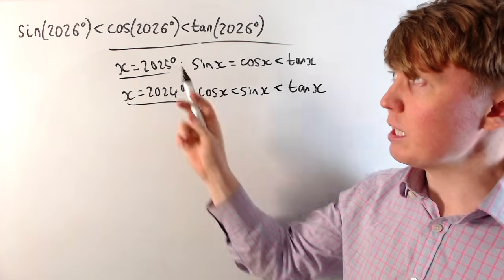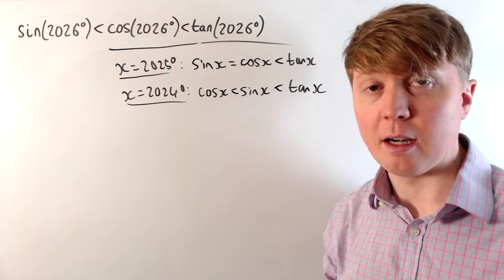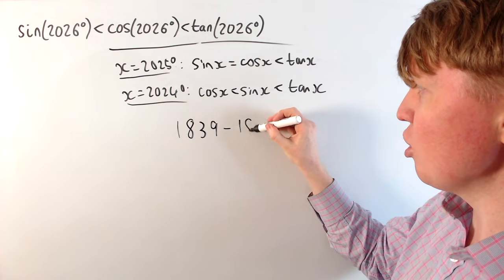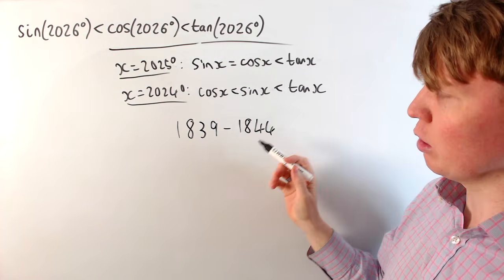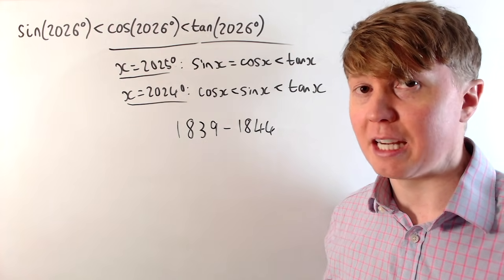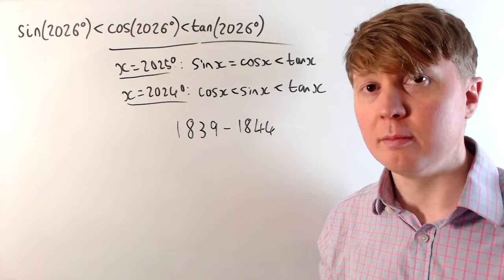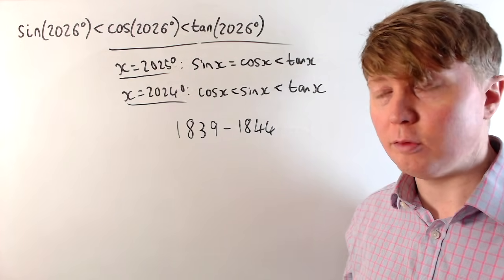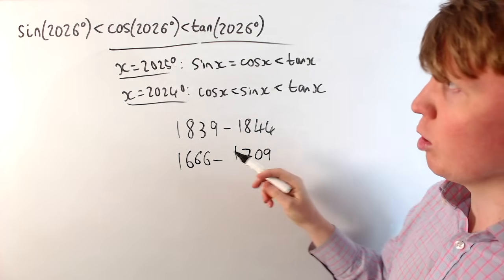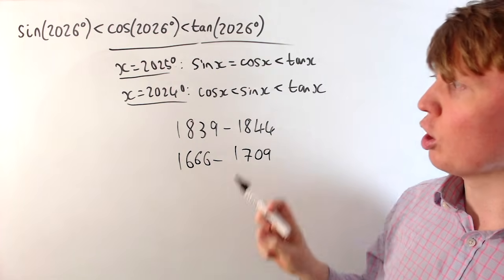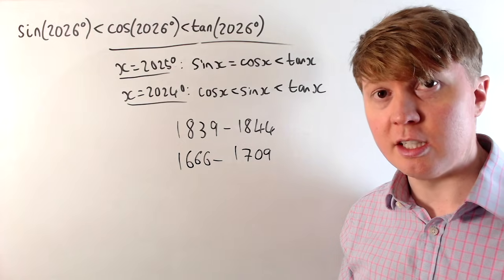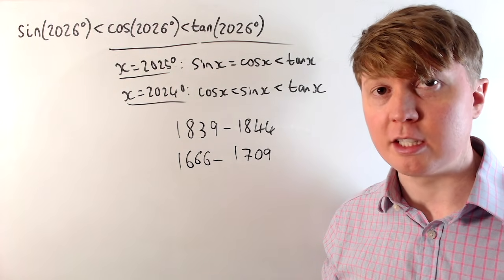So now this current pattern, where sine is less than cos is less than tan, hasn't actually happened since a brief period. This was from 1839 to 1844 inclusive, including both of these years, just considering these as being integers. And before this, there was a 44-year period from 1666 to 1709, where we have this order as well. And this year, 1666, was actually exactly 360 years ago.